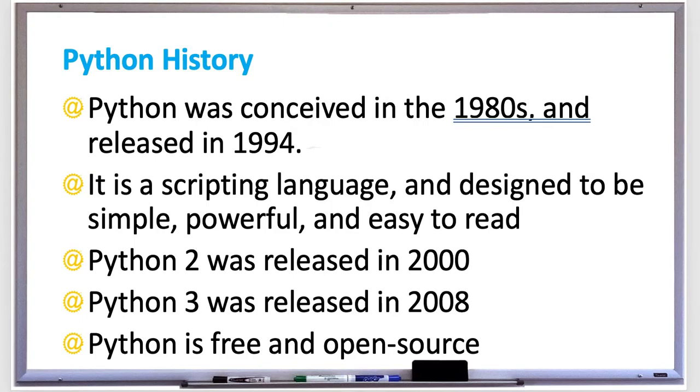In the late 80s, the Python programming language was invented by Guido van Rossum. It was based off another scripting language called ABC, and the name Python actually came from Guido's favorite TV show called Monty Python. Guido wanted the language to be simple, powerful, and easy to read.